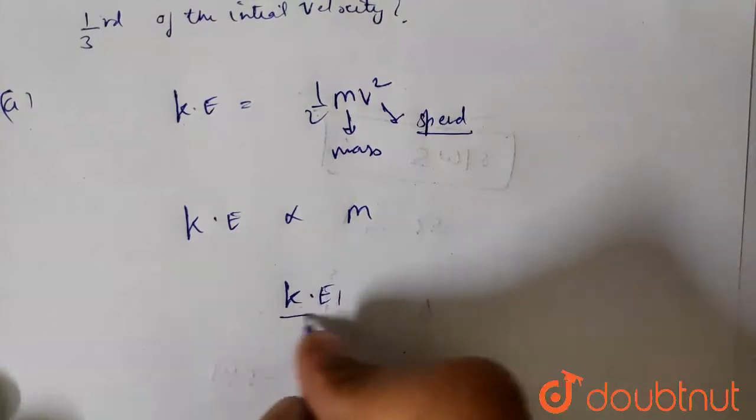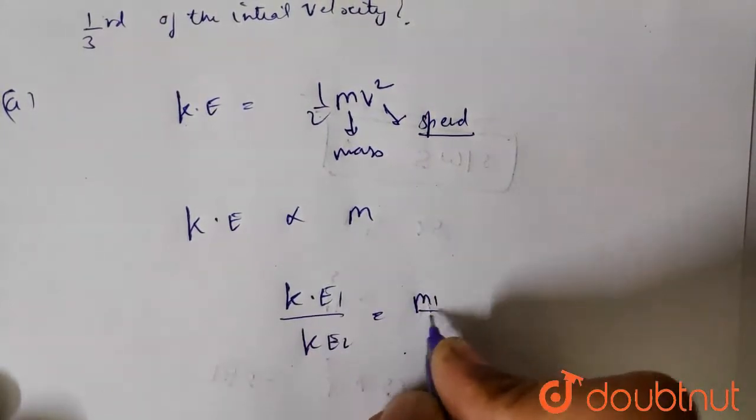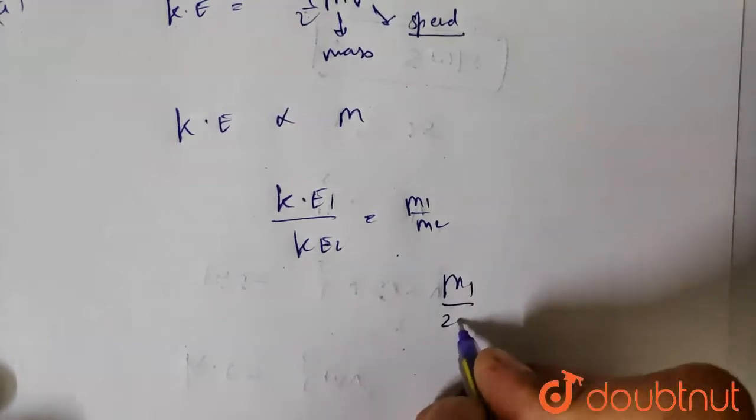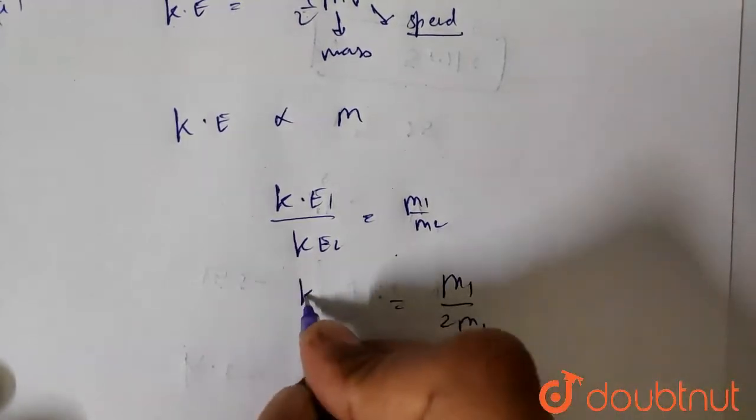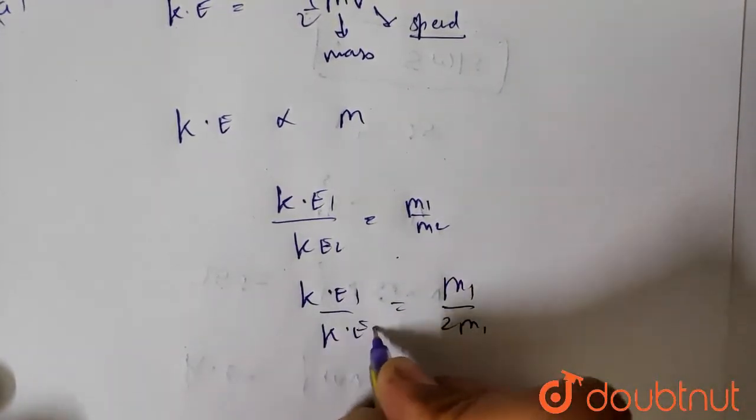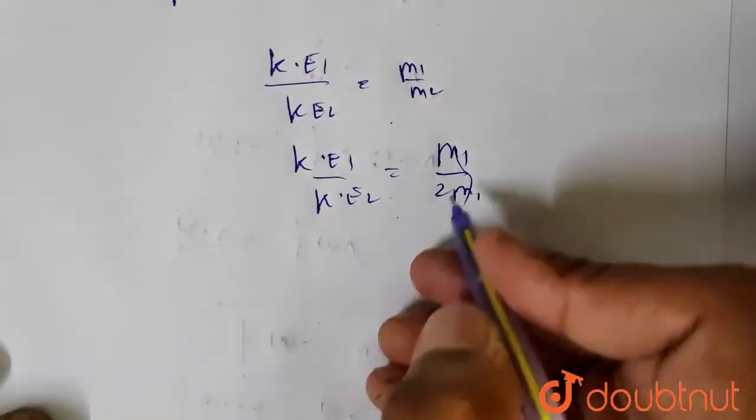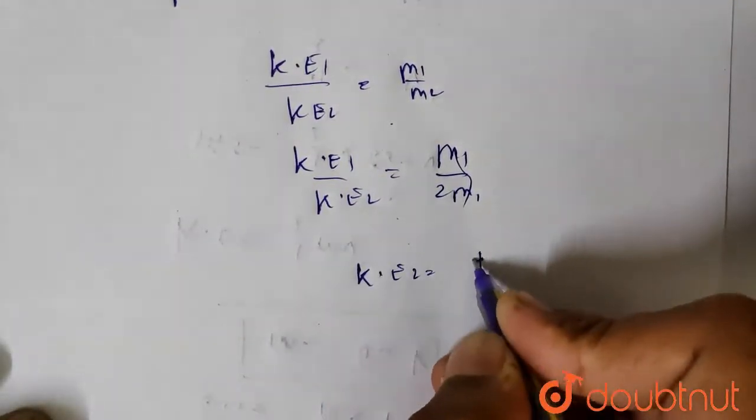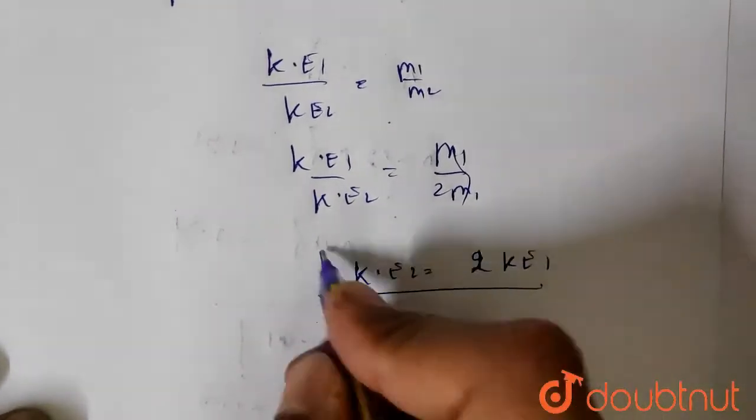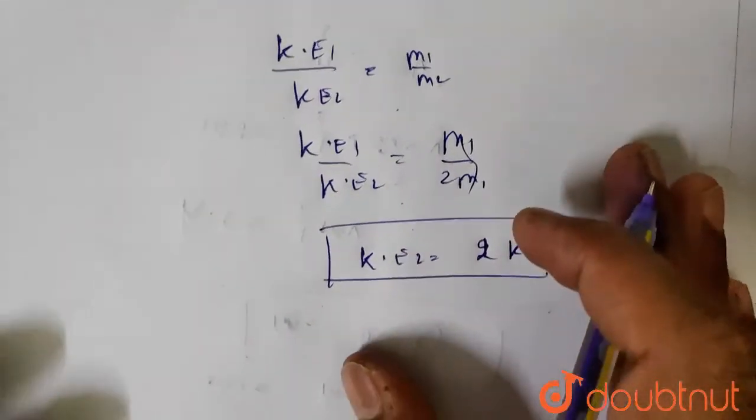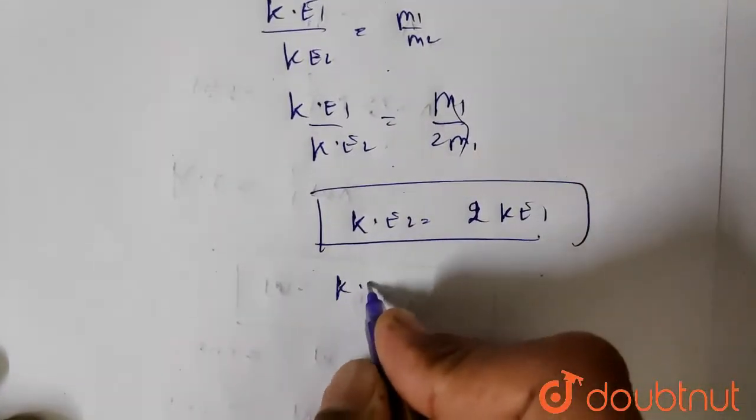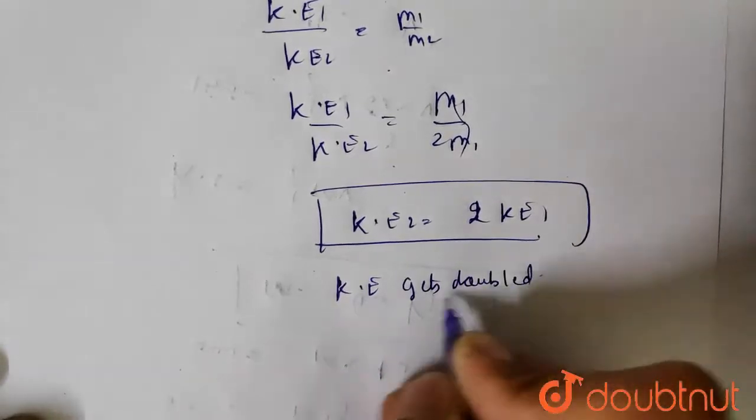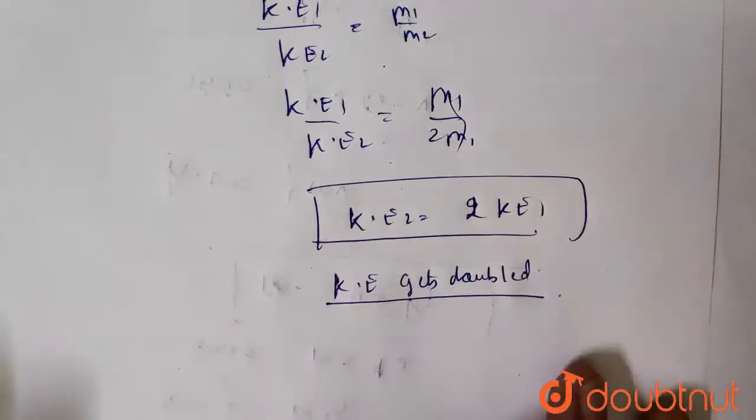KE1 upon KE2 equals m1 upon m2. Mass is doubled, so m1 upon 2m1. KE1 upon KE2, so KE2... m1 and m1 cancel, so KE2 will be twice of KE1. So final kinetic energy is doubled. Kinetic energy gets doubled.